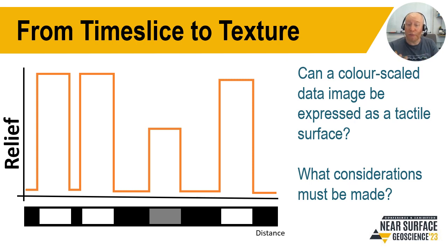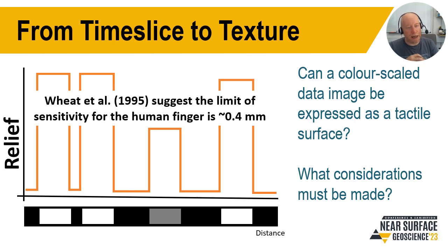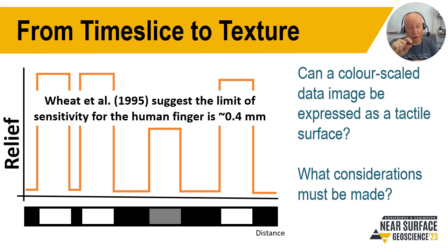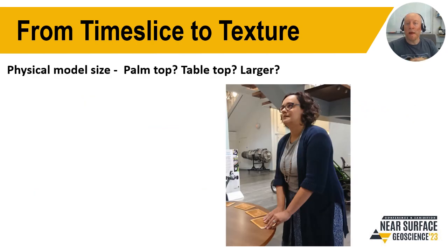Part of this project is to take these tactile models forward into participatory workshops with variously sighted participants. As a guideline, researchers in 1995 suggested that the limit of sensitivity for the human finger is about 0.4 millimetres — so having no less than 0.4 millimetres between the topographic regions we want someone to explore could be advantageous, though the answer really lies through participatory workshops. Another design consideration is the physical size of the model: is a palm-top representation enough, do we want something slightly larger that fits on a table, or something like a big centrepiece in a museum exhibit?